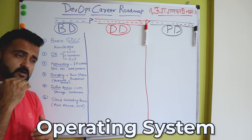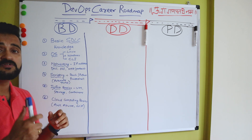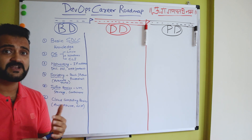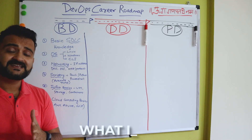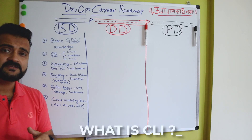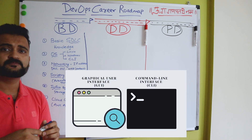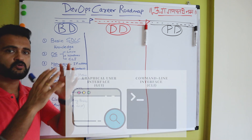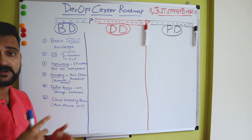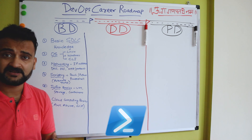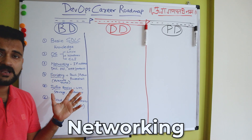You need some basic understanding of how programming and coding works. The second prerequisite is understanding operating systems, because you'll be spinning up a lot of infrastructure. You need to understand Linux and Windows very well, and especially the CLI — Command Line Interface — so that you can write scripts and automate stuff without going into the graphical user interface. For example, you could write scripts on PowerShell.